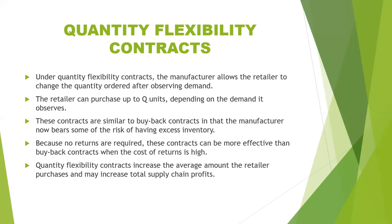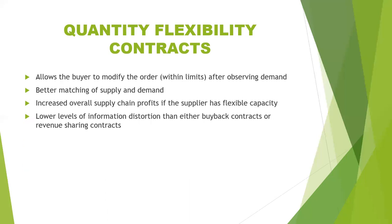The quantity flexibility contract increases the average amount the retailer purchases and also increases the total supply chain profits. It also allows the buyer to modify the order after observing the demand. It better matches supply and demand and increases supply chain profit if the supplier has flexible capacity, with lower levels of information distortion than either the buyback contract or revenue sharing contracts. So this concludes the three types of contracts in supply chain management.